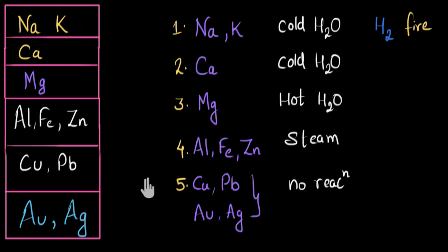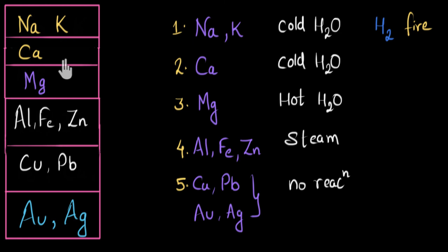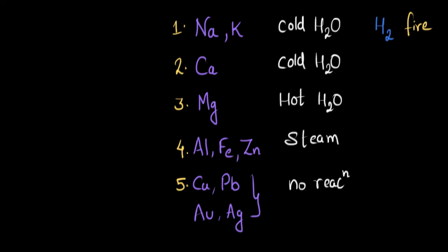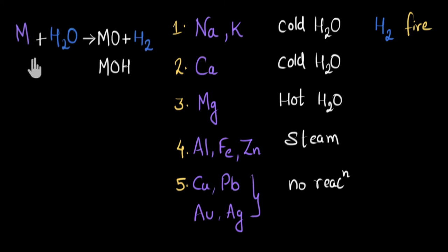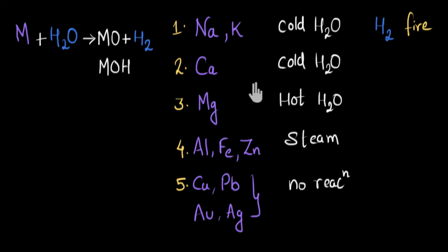This list is still not very detailed — at one rank we still have three metals occupying the same position, and we still do not know which is more reactive between copper and lead. So in future videos we will do more reactions to detail this list further. To summarize this video: when metals react with water, they form metal oxide and hydrogen gas is released. If the metal oxide is soluble in water, we get metal hydroxide. We saw how different metals react with water and used these observations to update our reactivity series ranking.